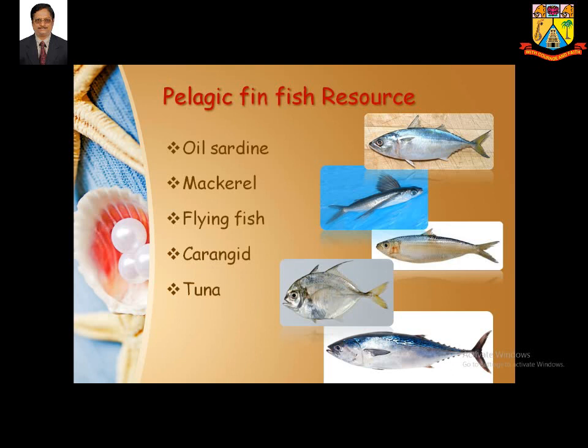Carangids include nearly 23 varieties and are a very good pelagic finfish resource. Tuna can be found around Lakshadweep and the Andaman and Nicobar Islands. It is the fastest swimming fish and is processed into various products such as tinned tuna and fish meal, which are byproducts of the tuna fishery.